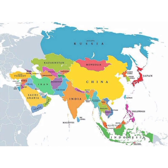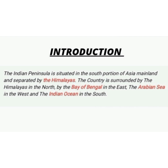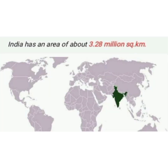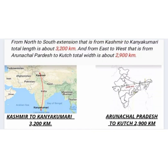The Indian peninsula is situated in the south portion of Asia mainland and separated by the Himalayas. The country is surrounded by the Himalayas in the north, by the Bay of Bengal in the east, the Arabian Sea in the west, and the Indian Ocean in the south. A peninsula is a piece of land that is surrounded by water on three sides.